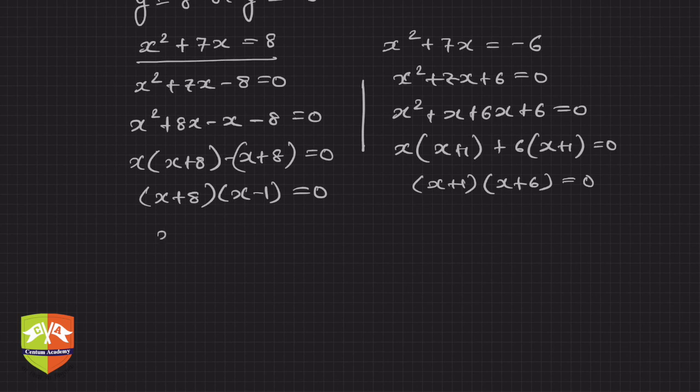Mechanical, isn't it? Now once you have cracked the real problem, other things are just a formality. Hence from here x is either minus 8 or x is equal to 1. These are two solutions from here. Or from here you will get x equals to minus 1 or x equals to minus 6. So these are the four solutions.